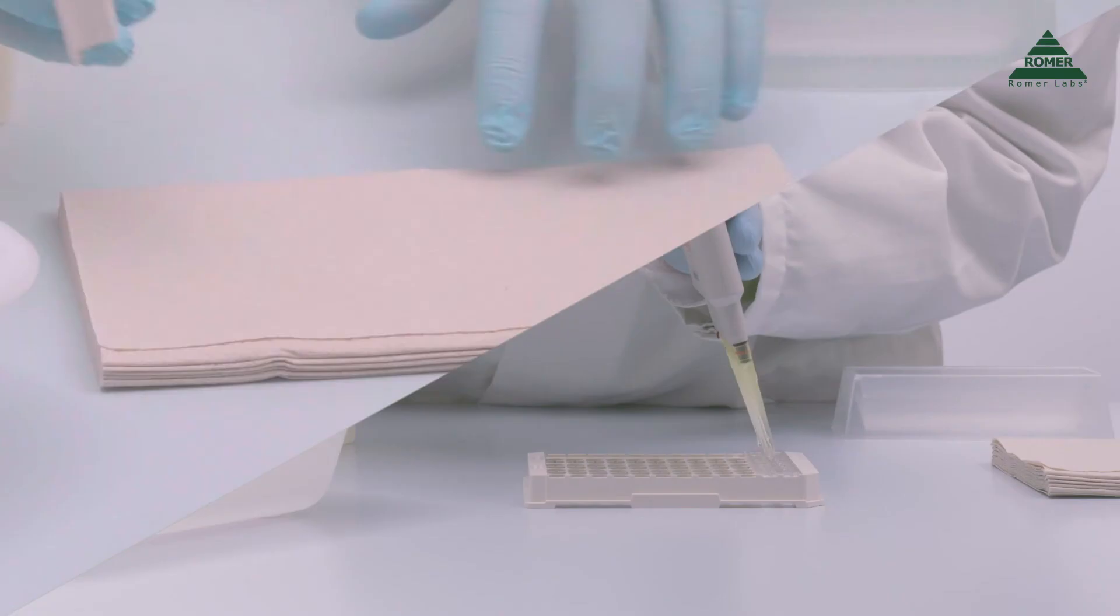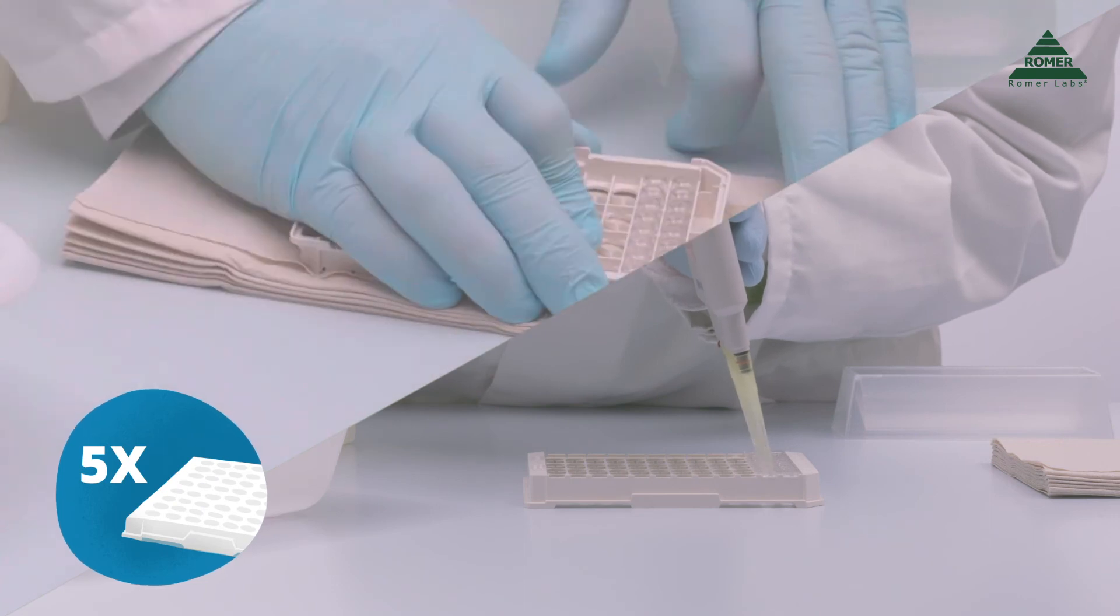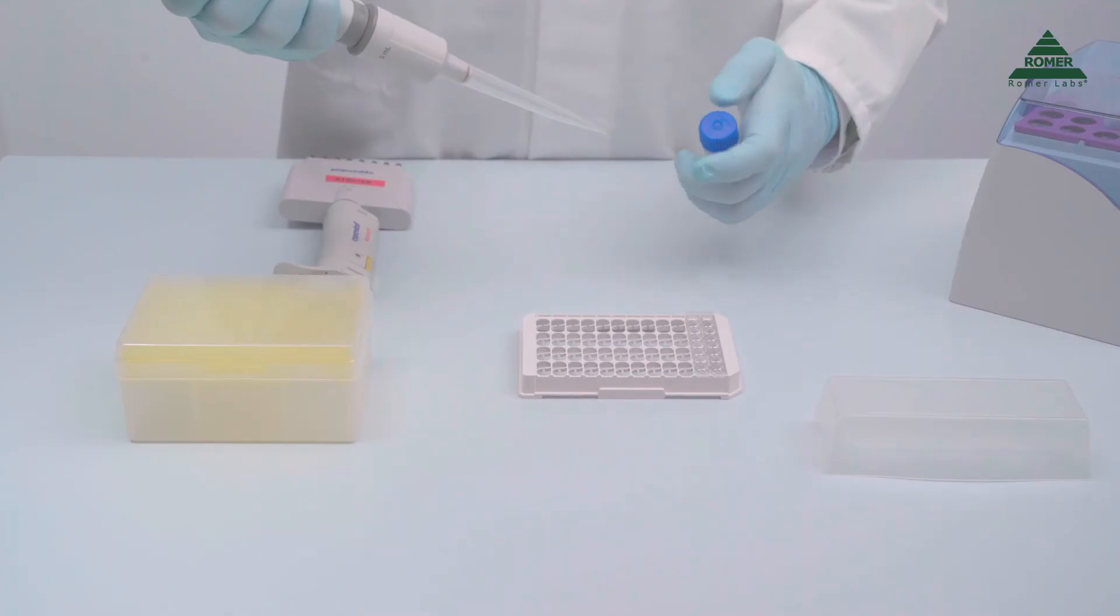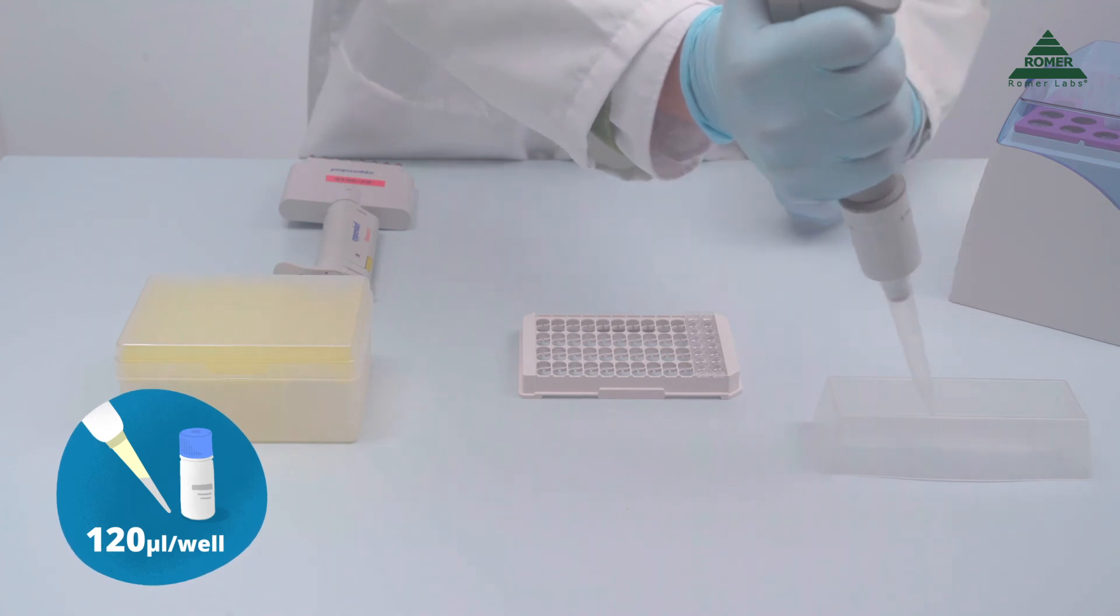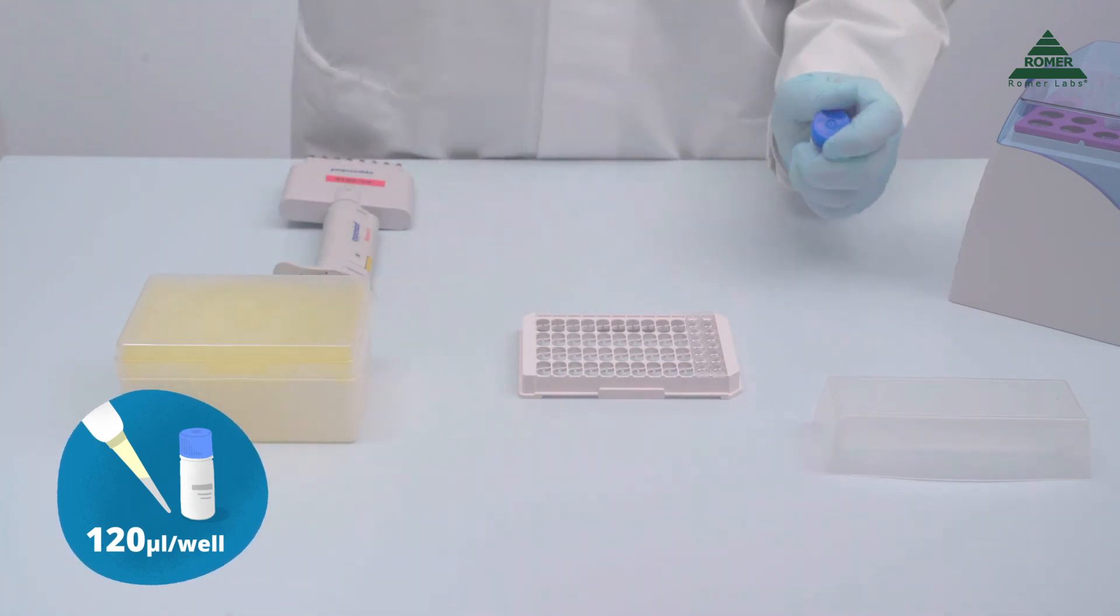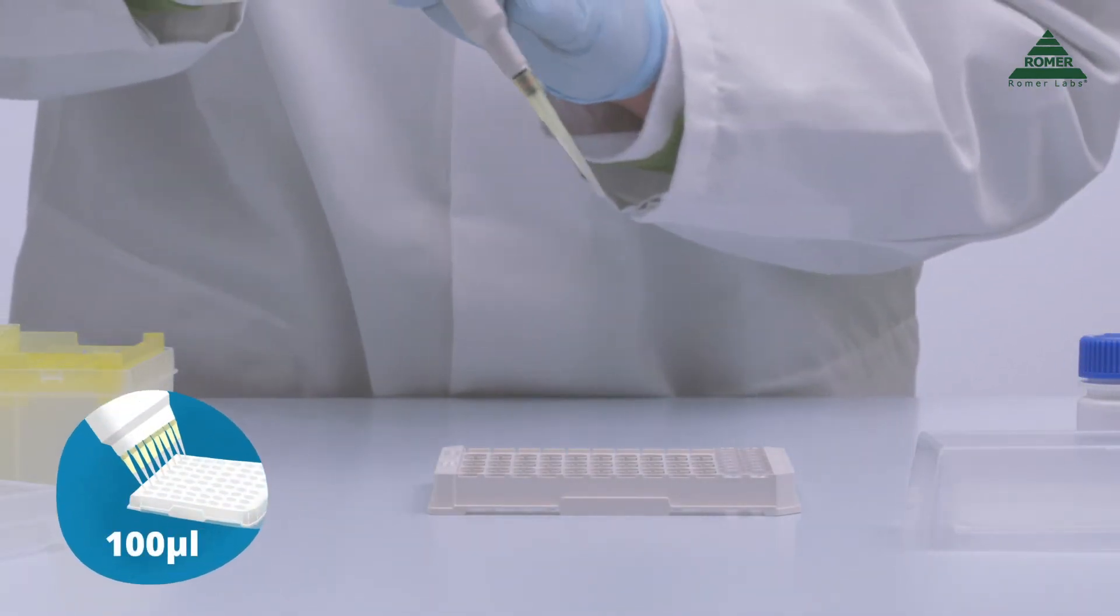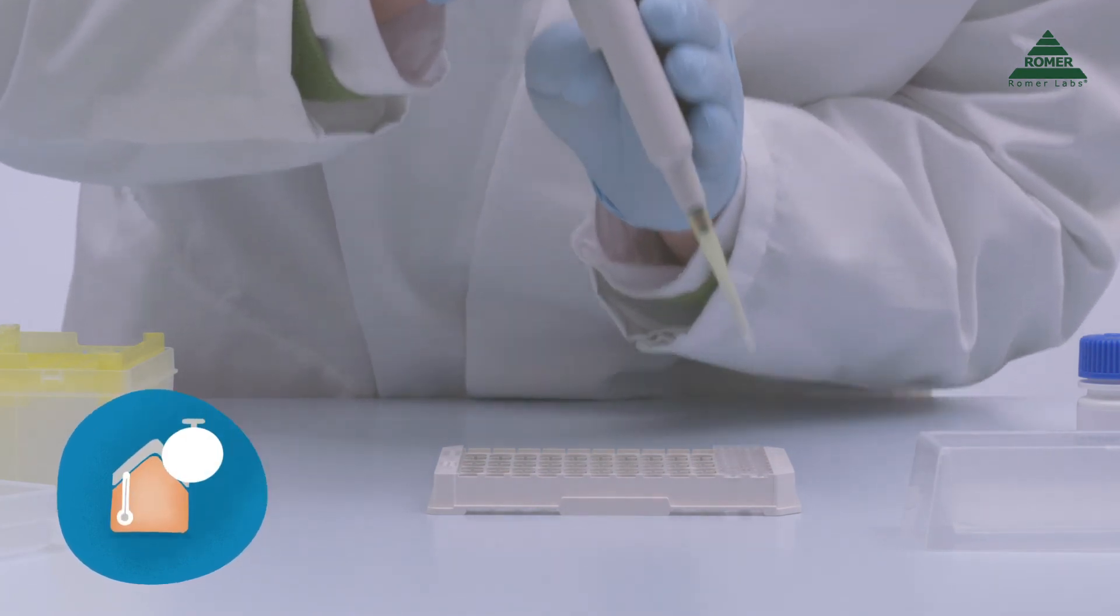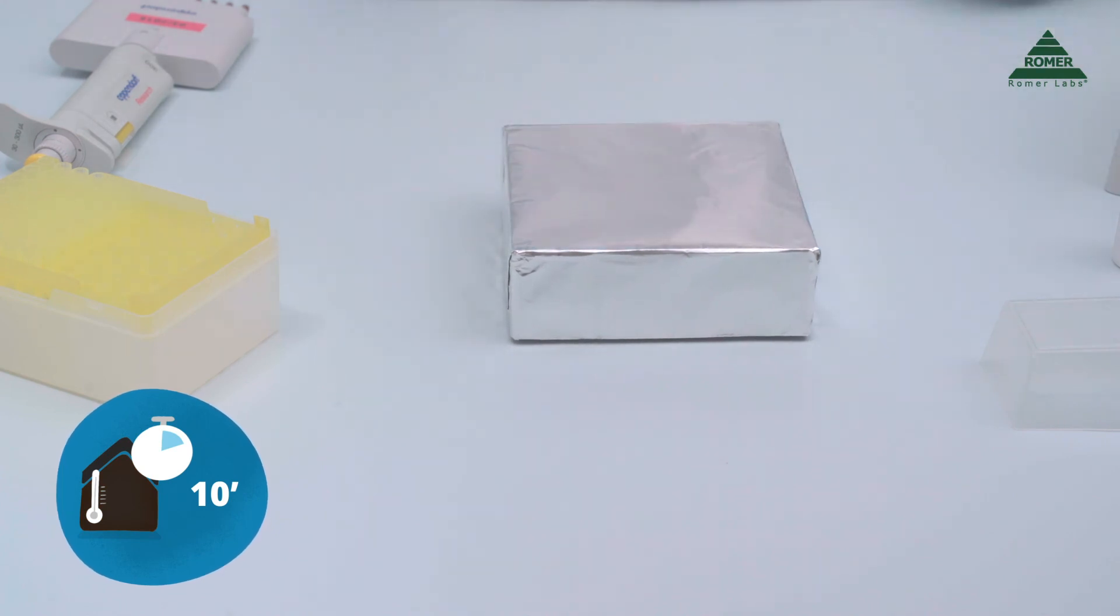Discard the content of the wells and wash 5 times as before with the wash buffer. Pipette the required amount of substrate solution into a reagent reservoir. You need approximately 120 microliters per well. Pipette 100 microliters of the substrate solution into each microwell with an 8-channel pipette and incubate in the dark at room temperature for 10 minutes.